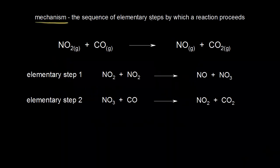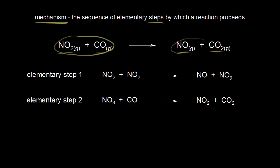A mechanism is the sequence of elementary steps by which a reaction proceeds. Looking at this reaction, nitrogen dioxide plus carbon monoxide gives us nitric oxide and carbon dioxide. Our two reactants don't go to our products in one step — there's a sequence of elementary steps by which the reaction proceeds. One possible mechanism for this reaction shows it in two elementary steps.